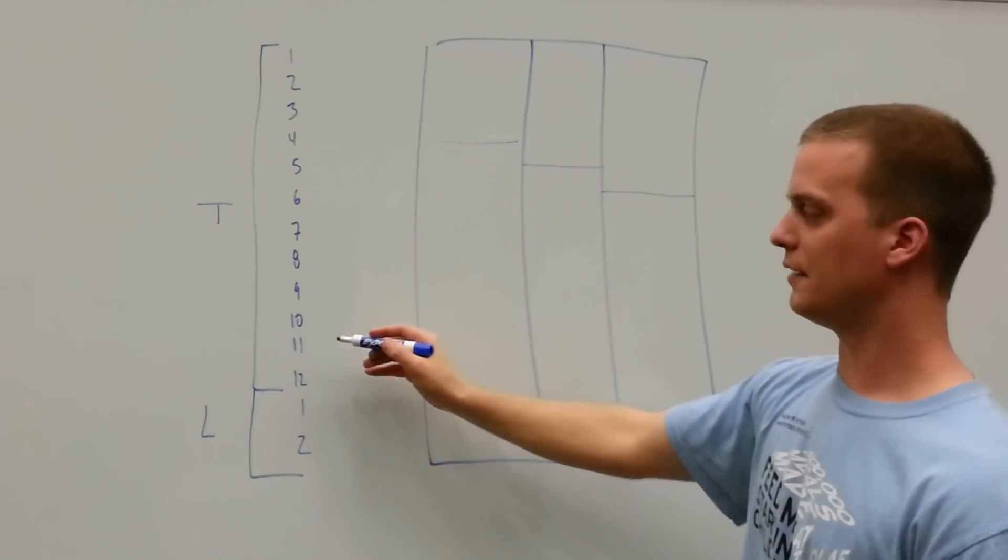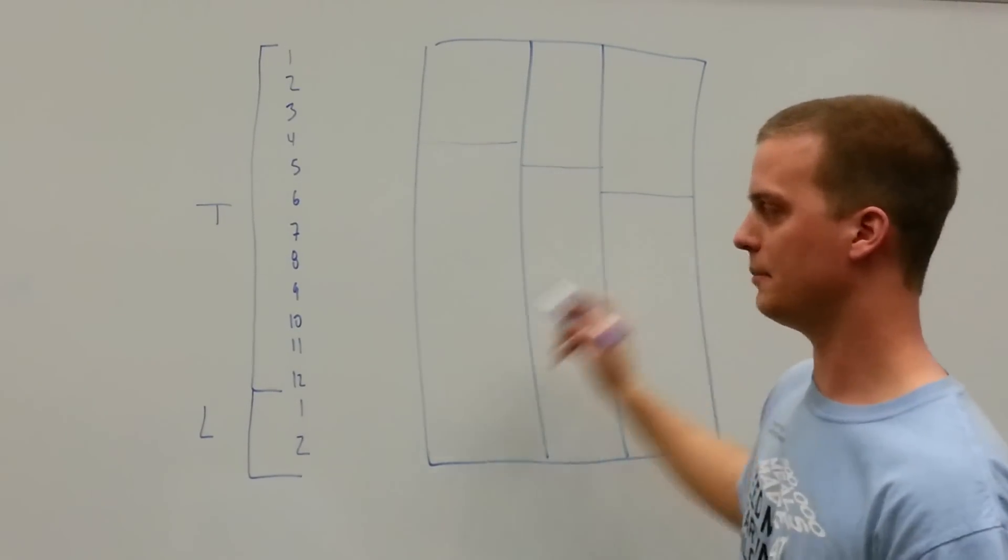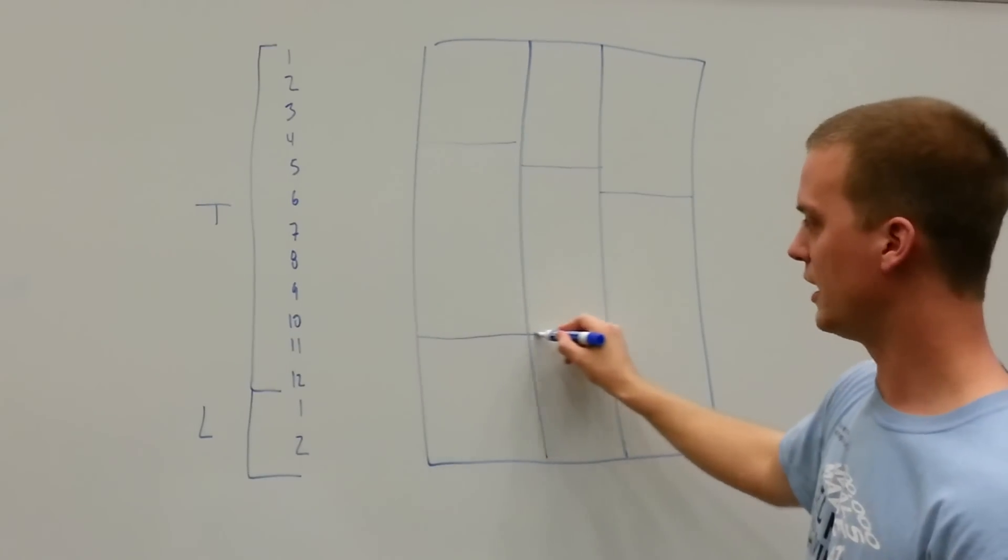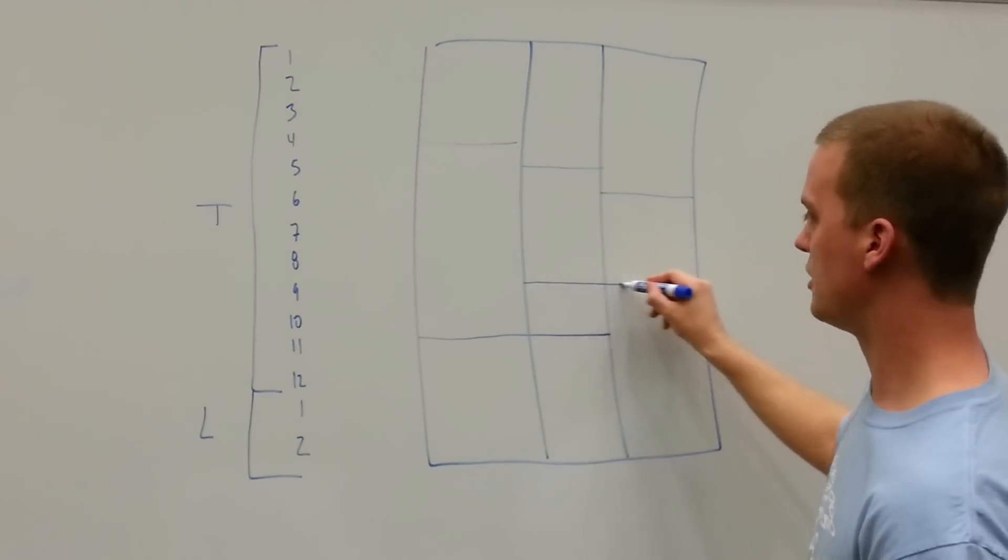Now we're going to go over to eleven, and again, this is just a few little things to memorize. So we have our stair steps, we're going to go to eleven and we're going to do a double line, and then we're going to go up to nine and do another double line.